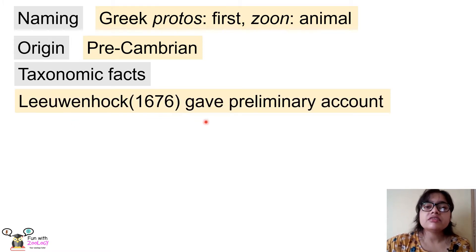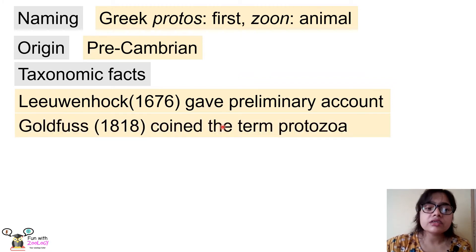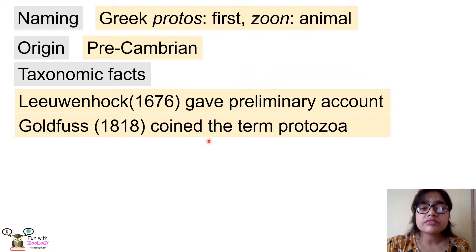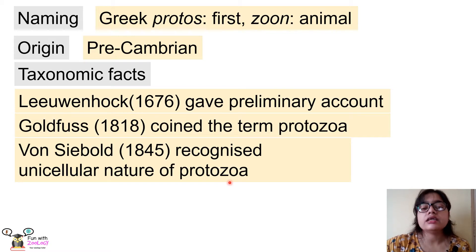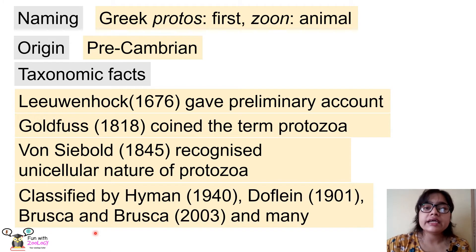The next thing is some important taxonomic facts about protozoans. Leeuwenhoek in 1676 gave the first preliminary account about protozoans after the discovery of the microscope. Later, Bold in 1818 coined the term 'Protozoa' — he first used this term. Also, von Siebold in 1845 recognized the unicellular nature of protozoans, meaning protozoans are made up of only one cell.